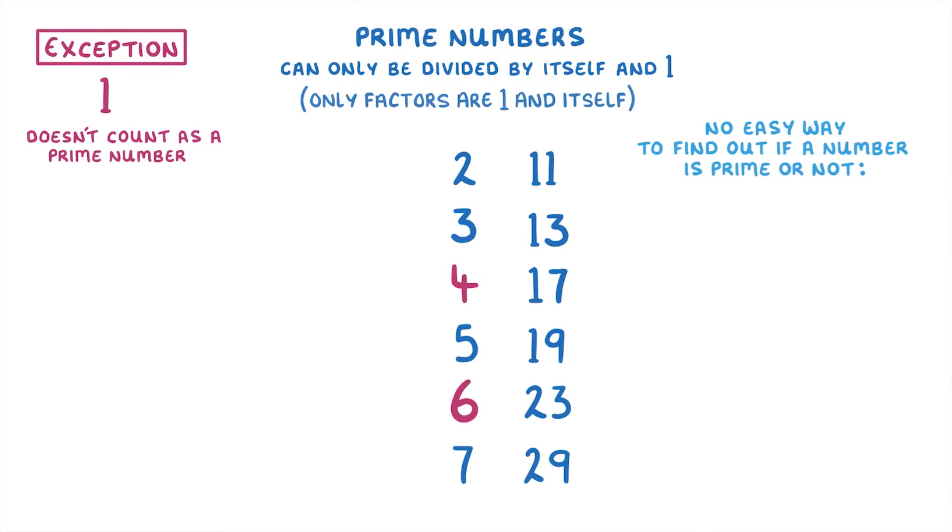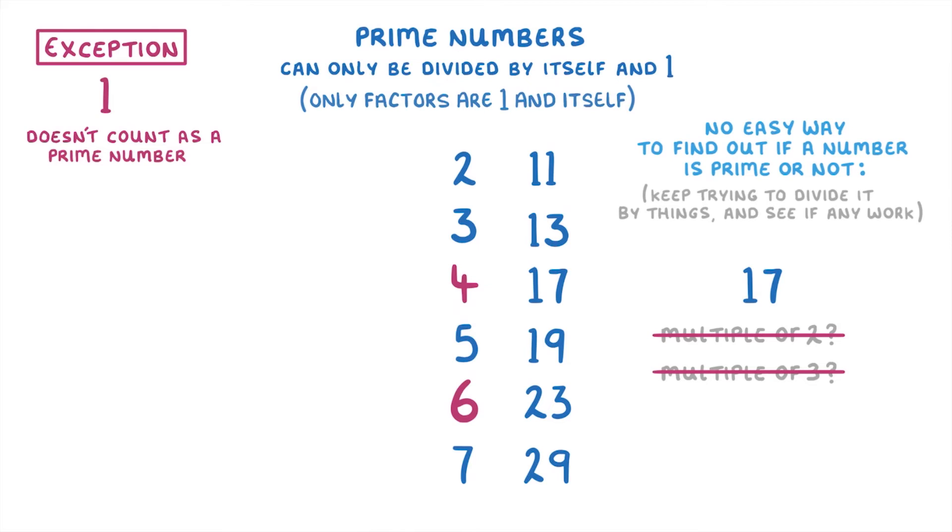Now, there's not really any easy way to find out if a number is prime or not. You basically just have to keep trying to divide it by things, and see if any of them work. For example, if we took the number seventeen, we could think to ourselves, is it a multiple of two? No. Is it a multiple of three? No. And so on, working our way through the numbers until we're happy that it's not divisible by any whole numbers, except one and seventeen.